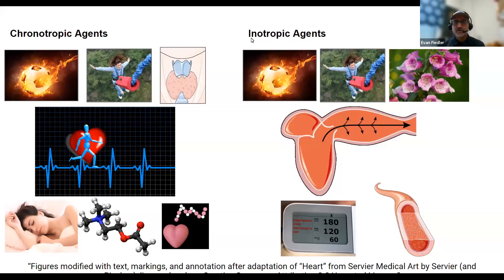Chronotropic and inotropic agents — chrono, think time. Chronotropic agents affect heart rate, measured in beats per minute. Inotropic agents affect contractility of the ventricles and also the stroke volume, which is the amount of blood ejected.